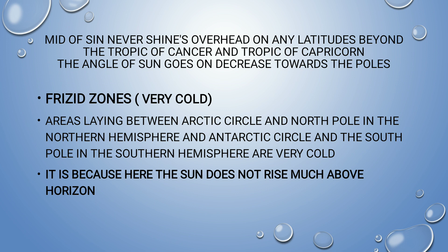Frigid zones are very cold regions. The areas lying between the Arctic Circle and the North Pole in the northern hemisphere, and between the Antarctic Circle and the South Pole in the southern hemisphere, are frigid zones. The Sun does not rise much above the horizon in these areas, so they receive very little heat and are extremely cold.